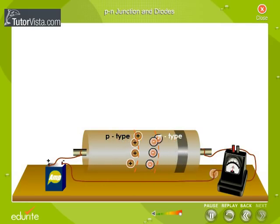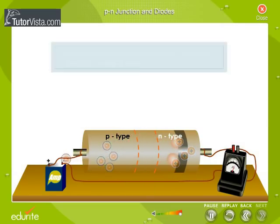Holes travel to the right and electrons to the left, constituting a current in the same direction. Thus, the P-N junction allows current carriers to flow through it if the junction is forward biased.